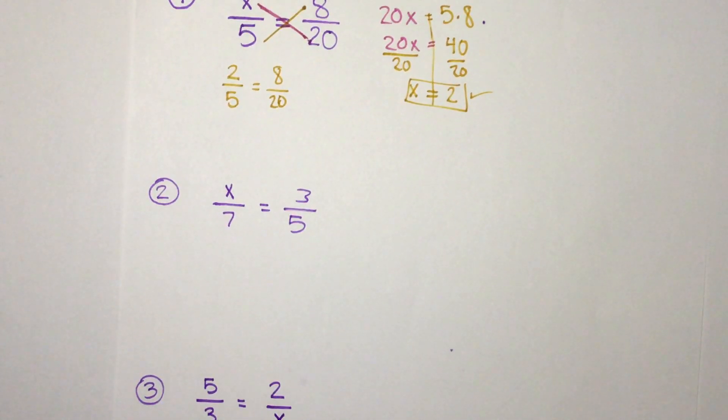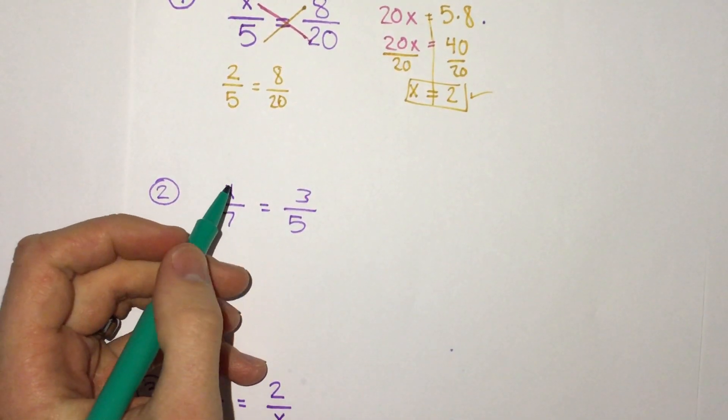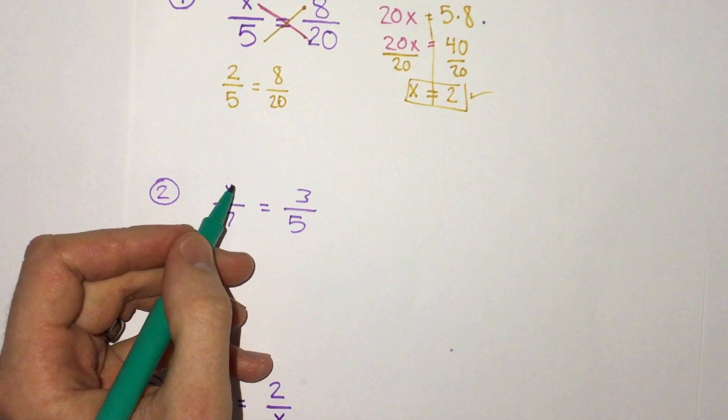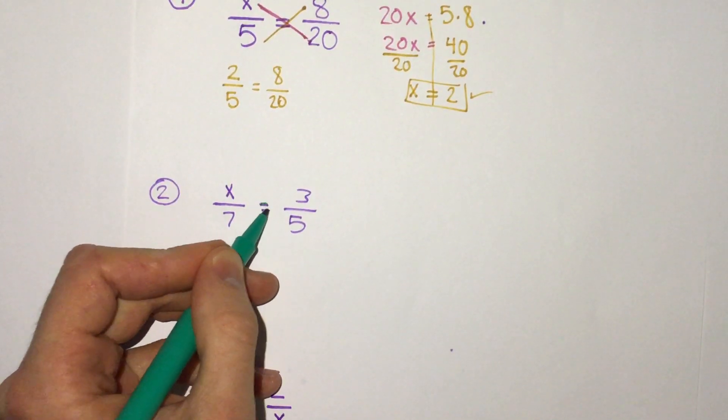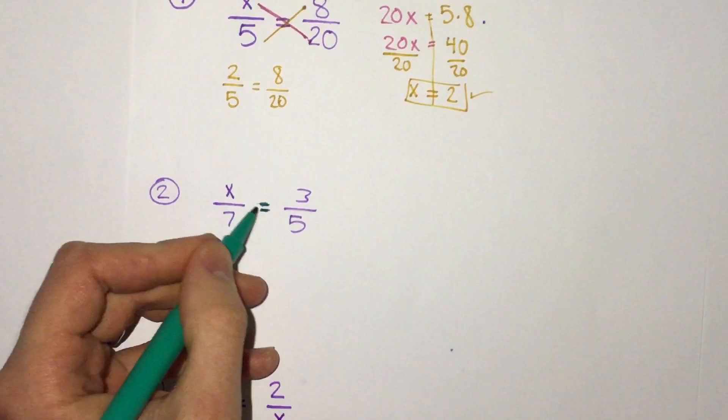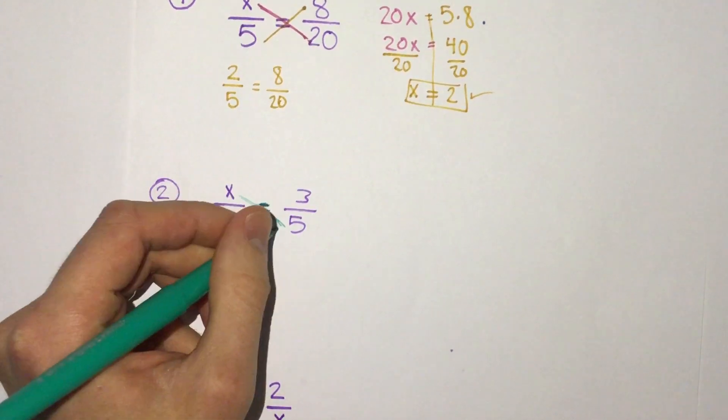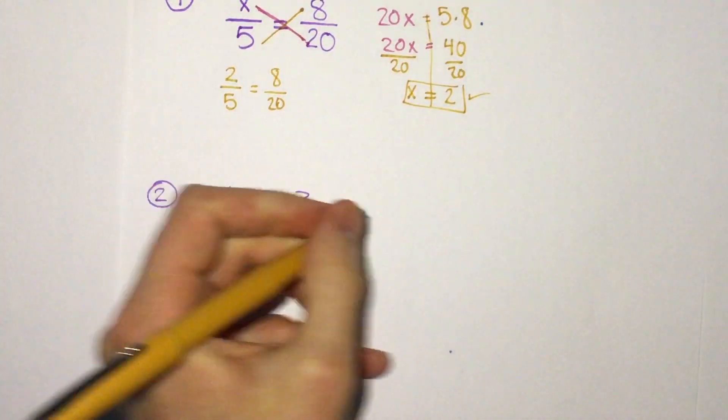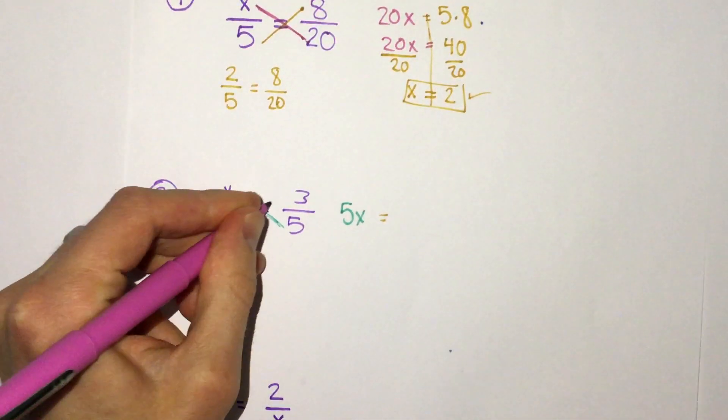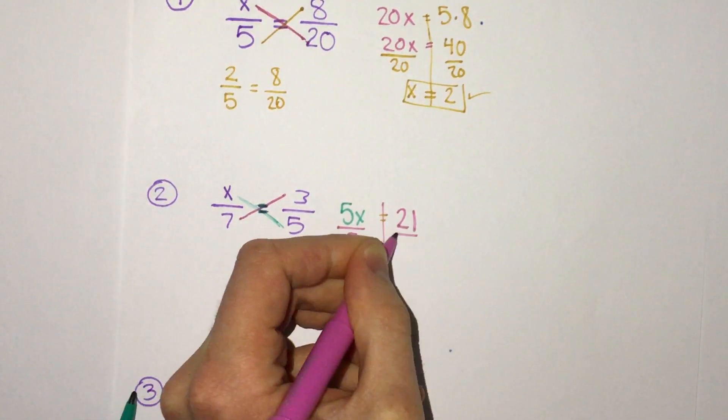For each of these we always want to think we're going to multiply diagonally. Something to remember is don't get this confused with multiplying fractions. Remember that multiplying fractions we multiply straight across, but this is not multiplying fractions. We have an equals between them. When we have an equal sign between two fractions this is where we multiply the diagonals. Here we do x times 5 is 5x and 7 times 3 is 21, so we have 5x equals 21.